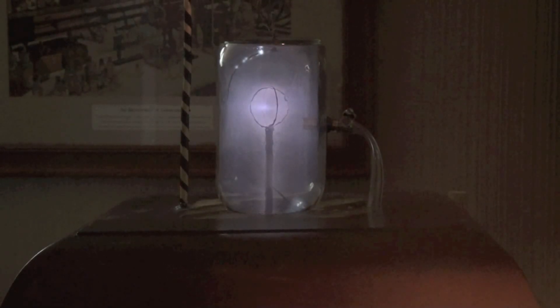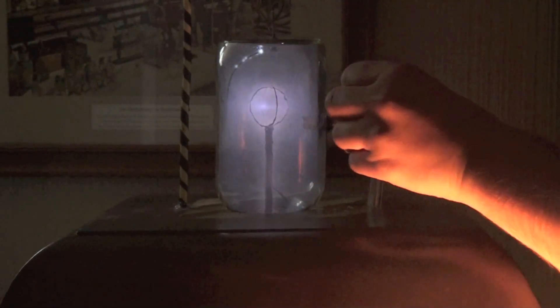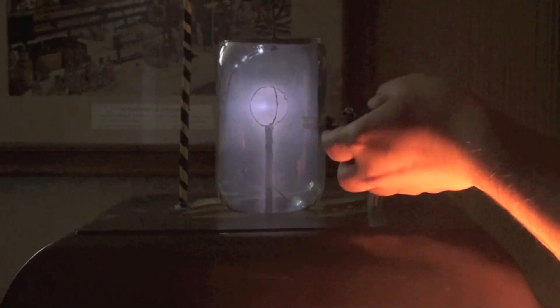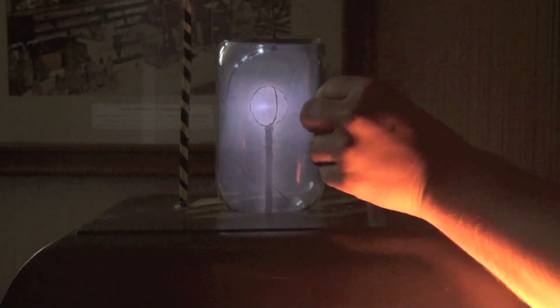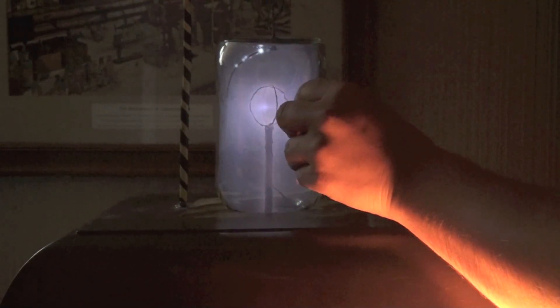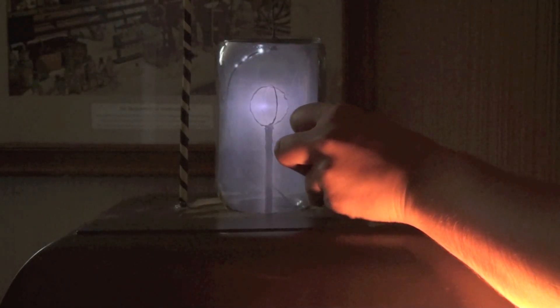What I did was I took two magnets and I would hold them right next to the chamber, and based on the polarity that's facing the chamber, different things would happen, and you can see these beautiful streams of plasma going away or going towards the magnets.